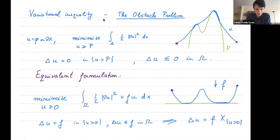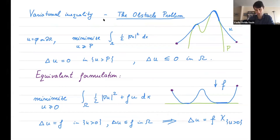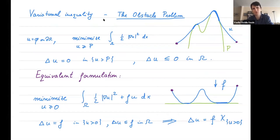One of the simplest variational inequalities is the obstacle problem. We are given some obstacle p (drawn in green), boundary data phi on the boundary of the domain, and we want to find the elastic membrane stretched across the obstacle p. We expect the solution to be continuous, and in the set where u strictly separates from the obstacle, it would be harmonic, since we can perturb u on both sides there.